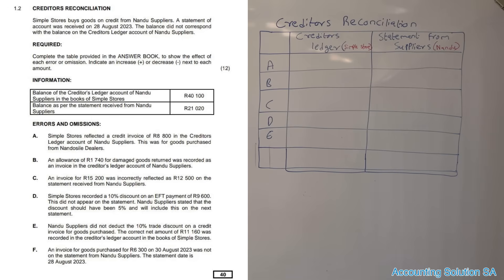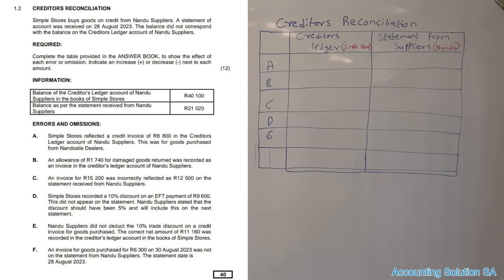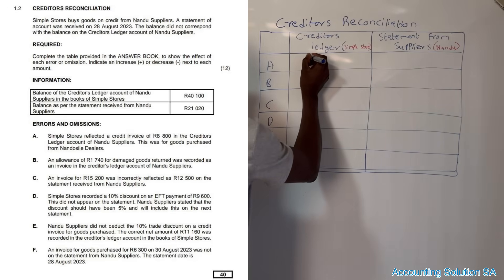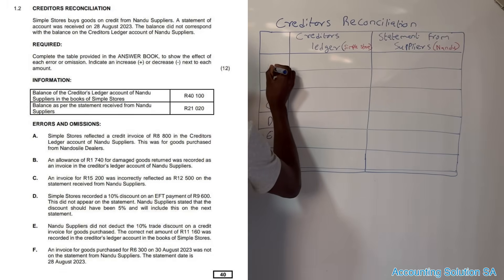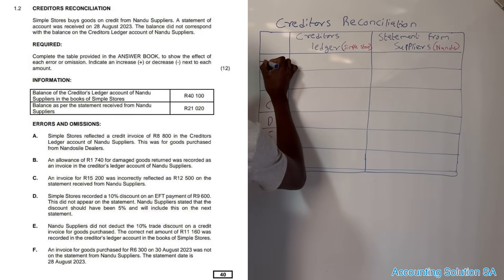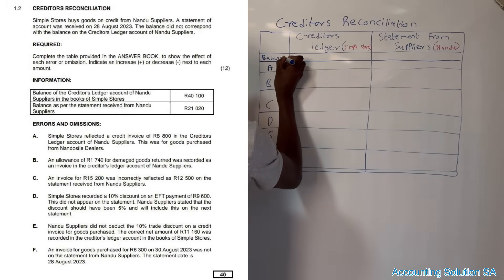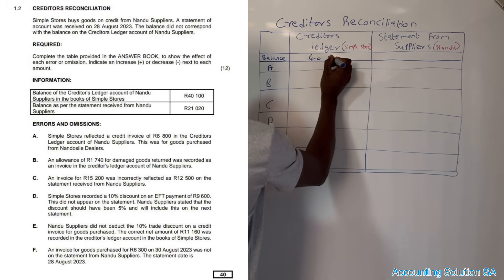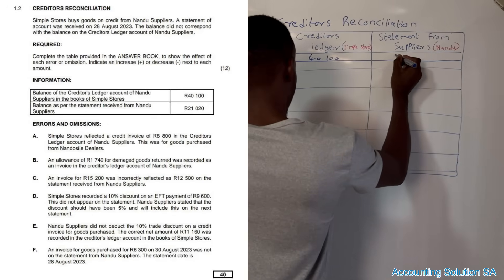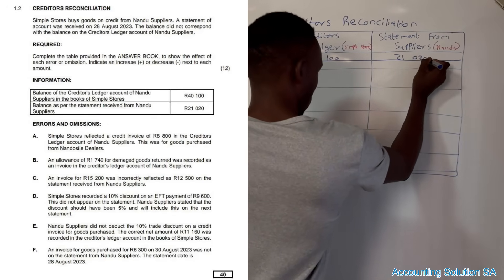The required task is to complete the table provided in the answer book. You must indicate whether each item is an increase or decrease — show plus or minus. The balance on the creditors ledger account of Nardu Supplier in the books of Simple Store was 40,100, and on our supplier's side the balance is 21,020.